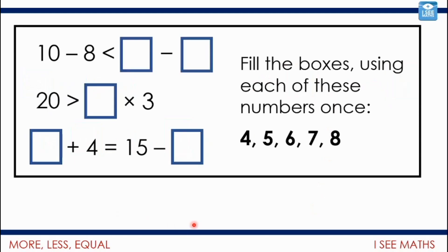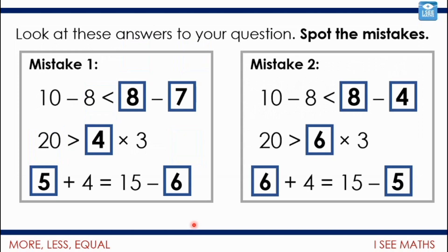This is the main task for today: fill in the boxes using each of these numbers exactly once so that all three number sentences are correct. Now here are some mistakes — have a look at those different attempts and work out what mistake is being made and which lines are incorrect. Pause the video and have a look at those mistakes.